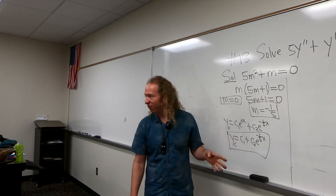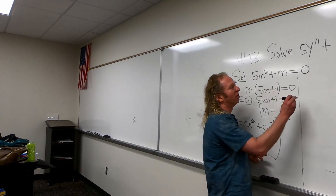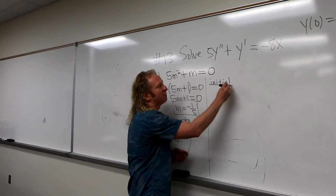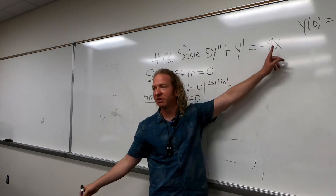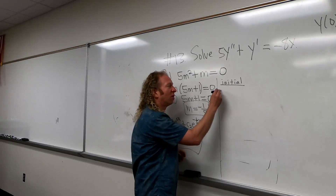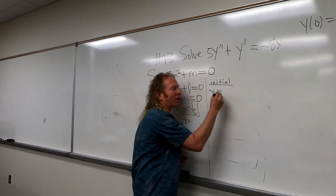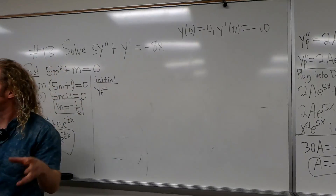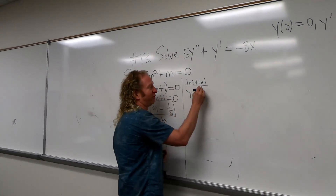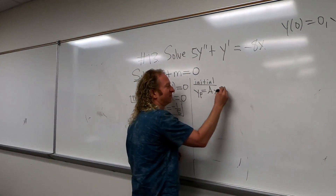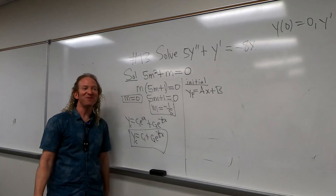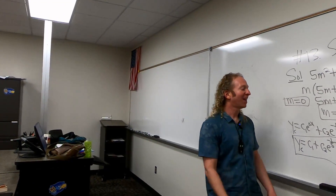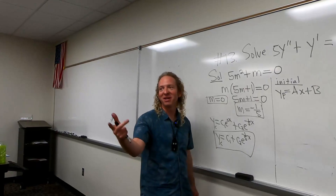Then we've got to find the form of Yp. So our initial guess is based off of the right-hand side. What would our initial guess be in this case? AX plus B — it's the full linear.